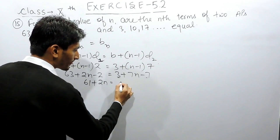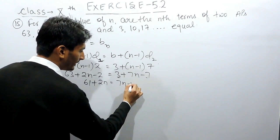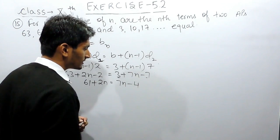This will be 7n and 3 minus 7 is minus 4.